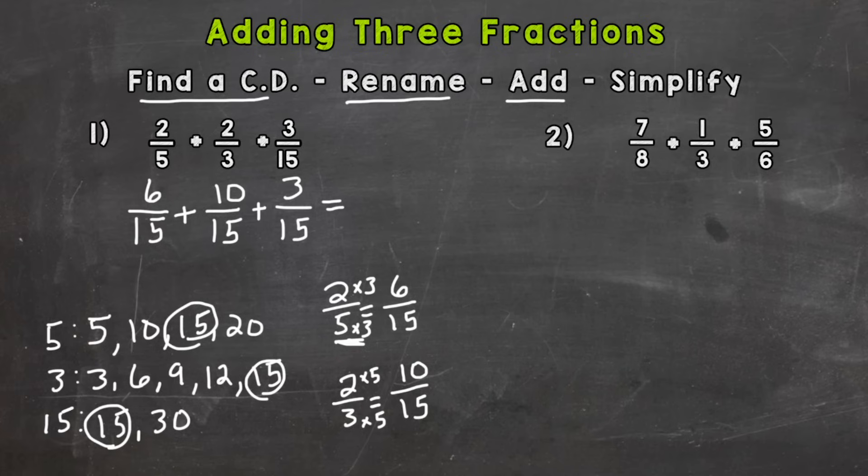So 6 plus 10 is 16 plus 3 is 19. And we always keep our denominator the same when we add fractions. It's 15. And now we're to the simplify if necessary step. Now our answer is correct there but it's an improper fraction and we don't want to leave it. We want to put it into a mixed number or sometimes it will work out as a whole number.